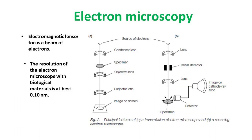What is Electron Microscopy? In contrast with Light Microscopy, where optical lenses focus a beam of light, in Electron Microscopy electromagnetic lenses focus a beam of electrons. Because electrons are absorbed by atoms in the air, the specimen has to be mounted in a vacuum within an evacuated tube. The resolution of the electron microscope with biological materials is at best 0.10 nanometers.